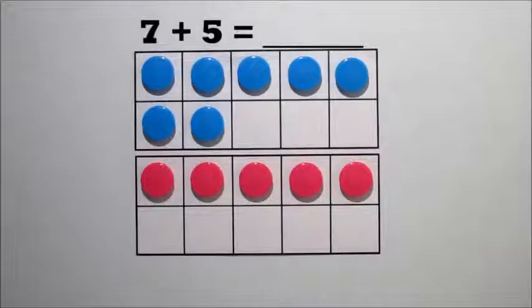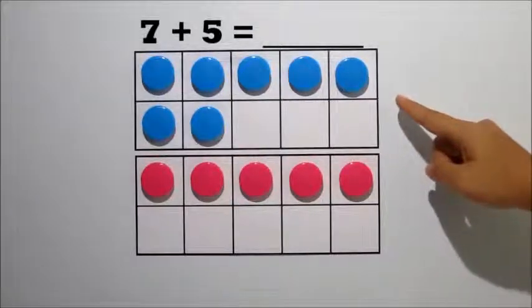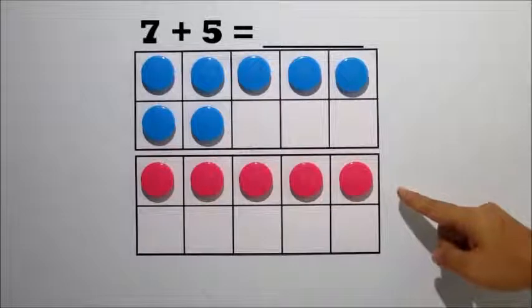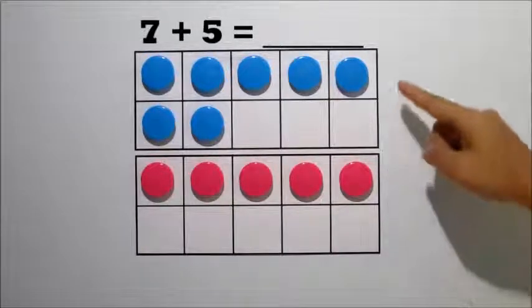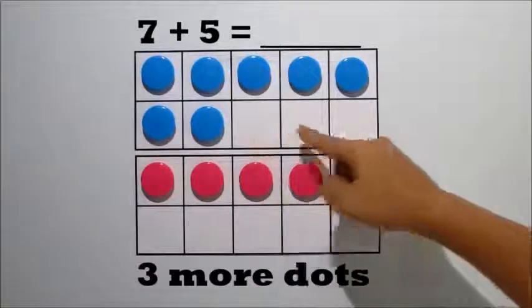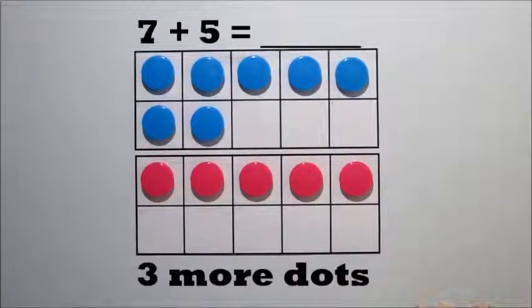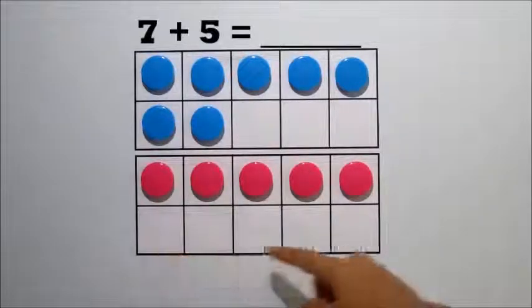Let's do 7 plus 5. There are 7 dots in the top frame and 5 dots in the bottom frame. The top frame needs 3 more dots to make 10. The bottom frame needs 5 more dots to make 10.